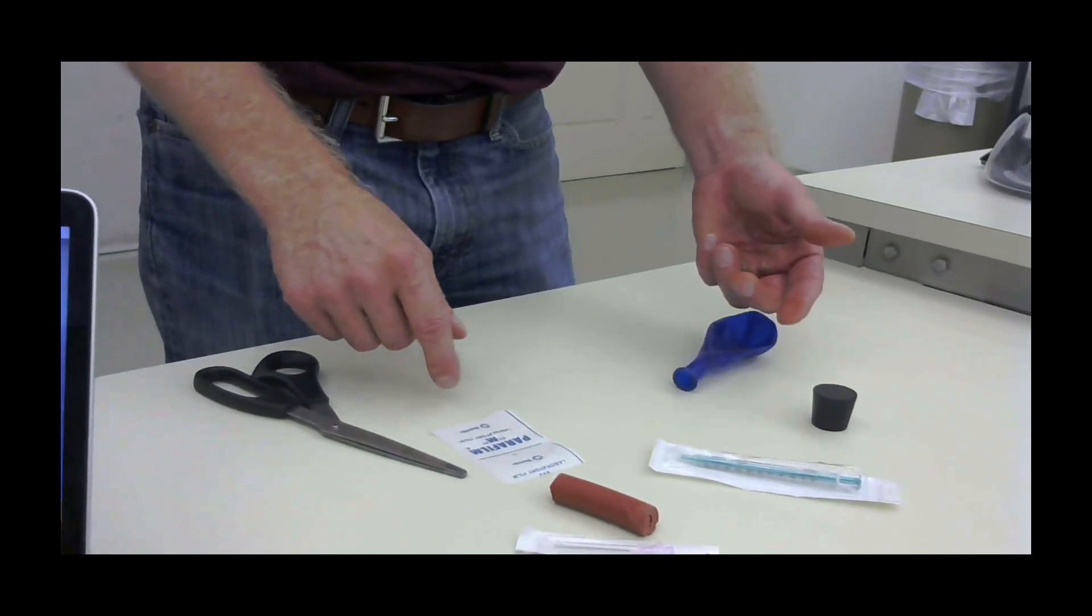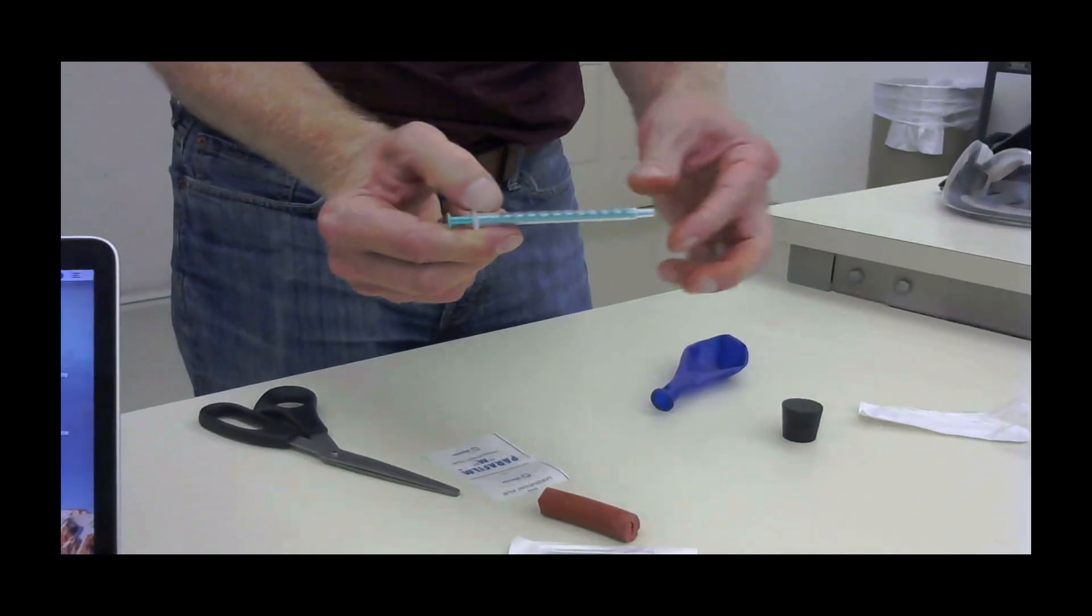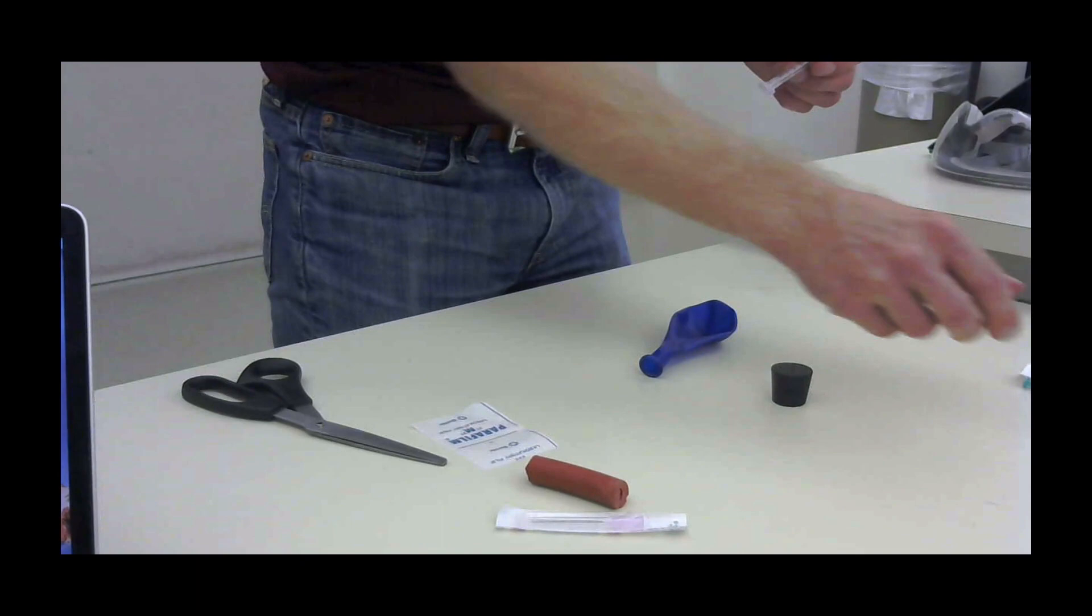Okay, and so the way we make these is you take the one milliliter syringe out of its wrapper, you pull the barrel out. That's discarded.